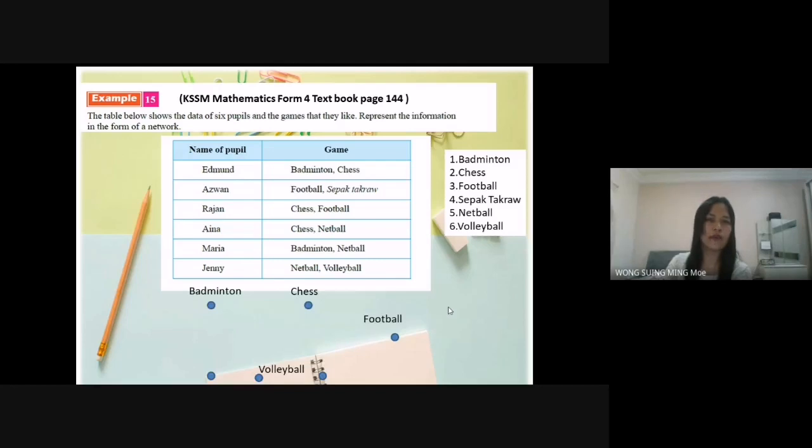We start from Edmang: badminton and chess. Then we label it Edmang. Azwan, football, sepak takro. So from football to sepak takro, I draw the line.